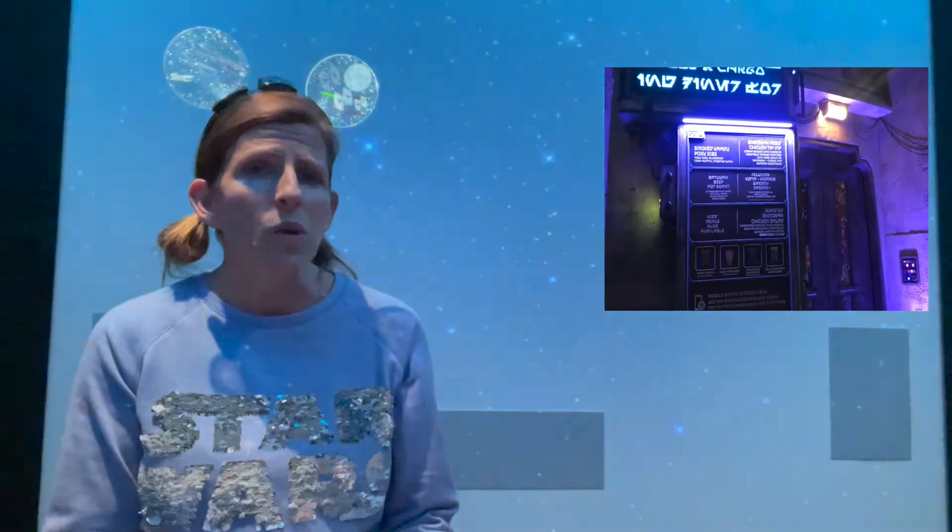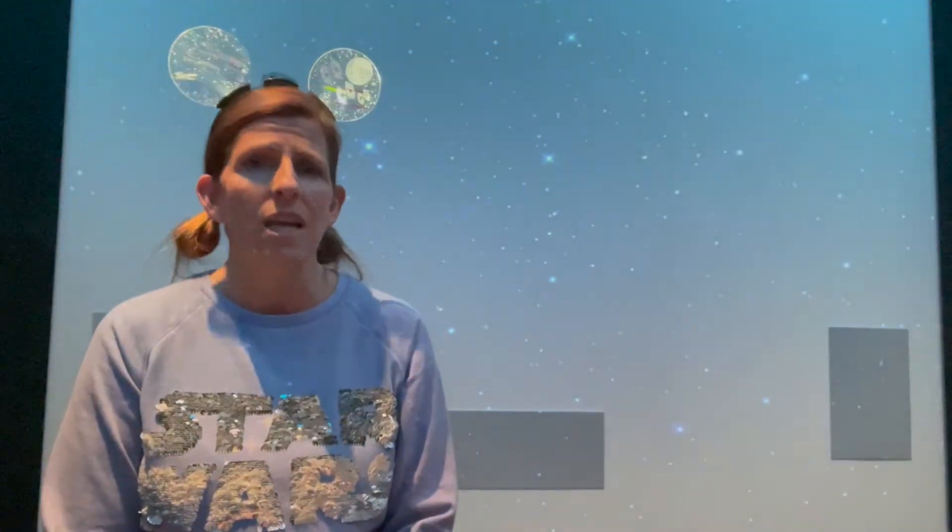As you're walking around, of course, fighting the dark side, you're definitely going to get hungry. Two of the main restaurants located in Galaxy's Edge are Docking Bay 7 and Ronto Roasters. Docking Bay 7 is located indoors, so it's a great place to take a break and cool off. They have delicious food and beverages, as well as adult beverages. I had the pot roast there. If you've eaten there, write in the comments below what some of your favorite items were.